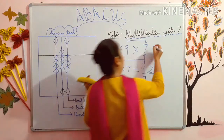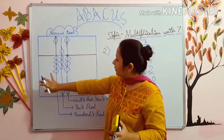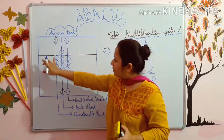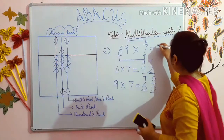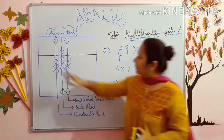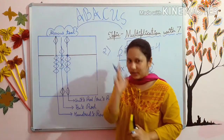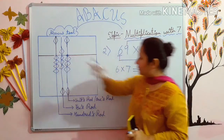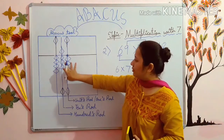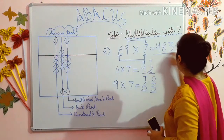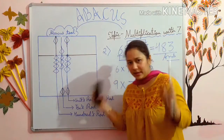Now your question is done. Just put the answer here. See, in 100's rod all 4 beads are up: 1, 2, 3, 4. Then in 10's rod, the 5 bead is down — this means it is added — so we count: 5, 6, 7, 8. And in 1's rod: 1, 2, 3. So this is your answer.